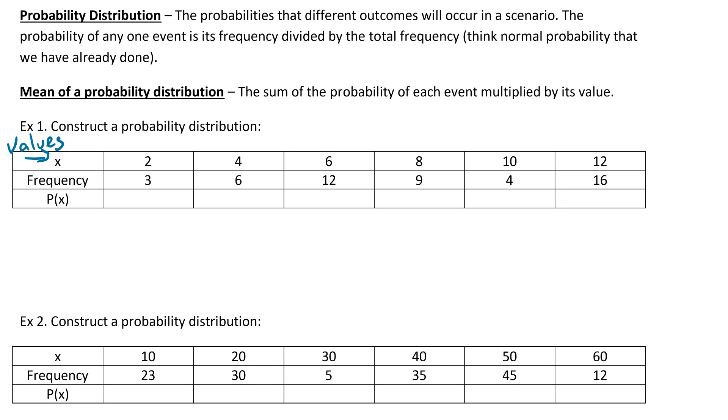To do that, the first thing that we need to do is we just need to add up all of the frequencies. So this entire row, 3 plus 6 plus 12 plus 9 plus 4 plus 16 would get us 50. That's our total frequency.